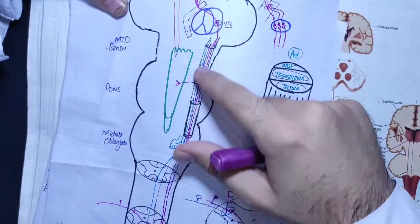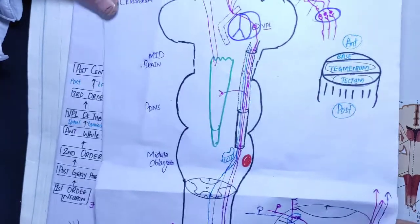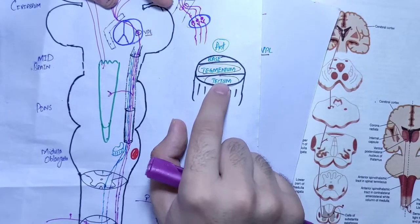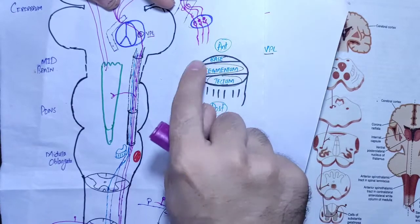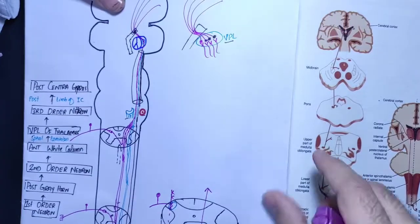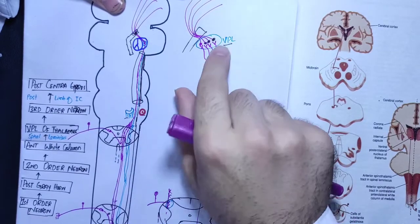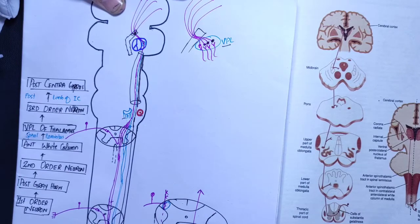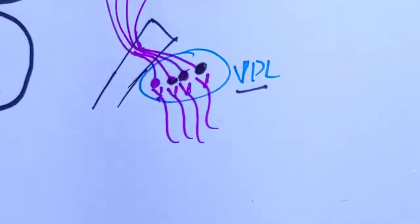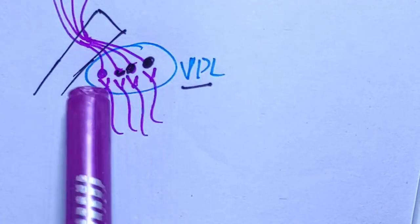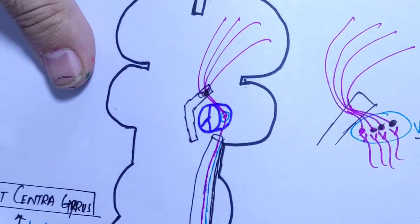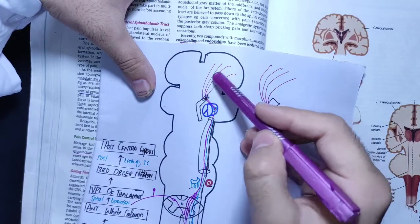This is what we call the spinal lemniscus. This is a sheet where all the fibers go up. In the pons area it is very posteriorly placed, but when it goes to the midbrain it moves anteriorly into the tegmentum. Then it goes into the thalamic nucleus, specifically the posterior limb area.